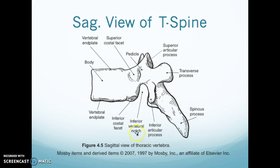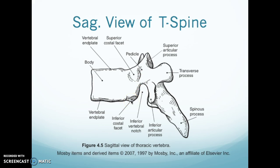Same slide — be able to label that. Here's a sagittal view of the T-spine. Starting here, this is your body. You have your vertebral end plates top and bottom, your superior costal facet with your pedicle, your superior articular process, your transverse process coming straight at you, and your spinous process. Heading south you have your inferior articular process with your inferior vertebral notch and your inferior costal facet.